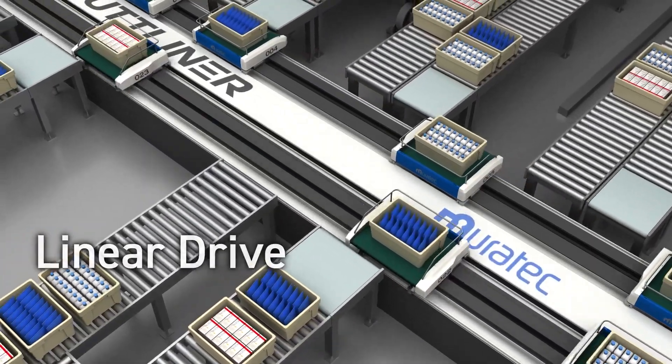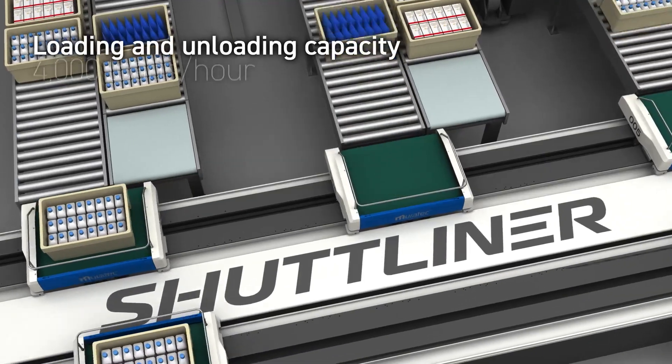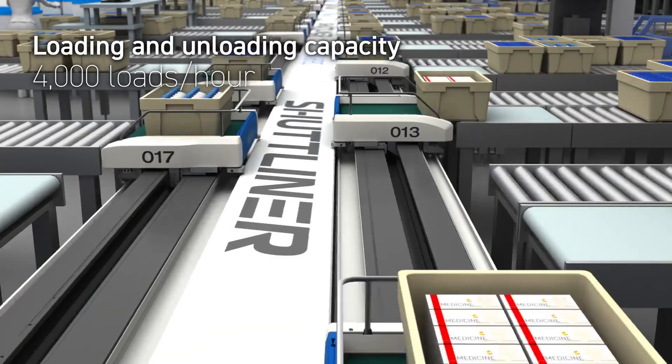The Shutliner enables fast and smooth transfers of goods by shuttles, with a maximum throughput of up to 4,000 cases per hour.